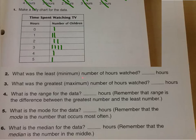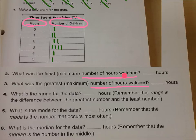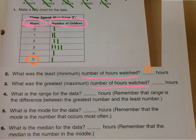But you have to be careful which numbers you're looking at. We need the minimum number of hours watched and the maximum number of hours watched. These numbers on the right column are the numbers of children — the hours are here; that's what we're looking for. So the minimum number of hours watched is zero — one child watched zero hours, so good for him or her. Then the maximum number of hours watched is five hours.